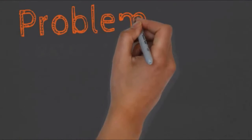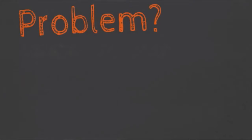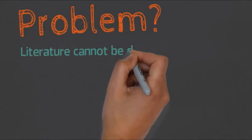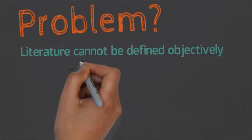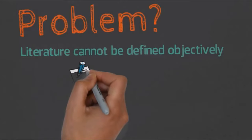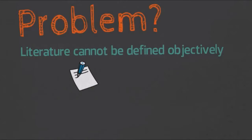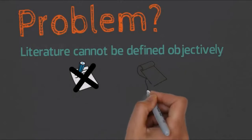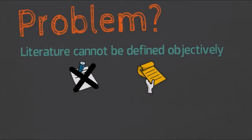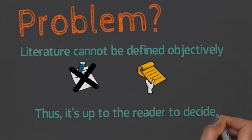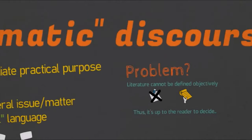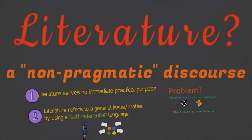What is the problem surrounding this last definition? One major problem is that literature cannot be defined objectively. It is not about what is written but rather how it is interpreted when it is read. It is in the mind of the reader to interpret — different people may have their own criteria for deciding what constitutes literature. That is the only problem for this last definition.